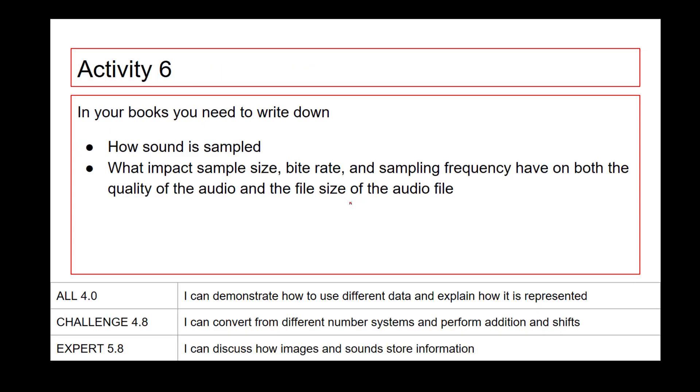There are sample size, bit rate, and sampling frequency. These are three impacts on the quality of the audio. And that's something that you need to research. So I want you to write down how sound is sampled. And I want you to write down what impacts sample size, bit rate and sampling frequency have on both the quality of the audio file and the file size of the audio file. And if we think back to where we were looking previously at images, if we're increasing things, we're probably going to impact the file size by making it larger.